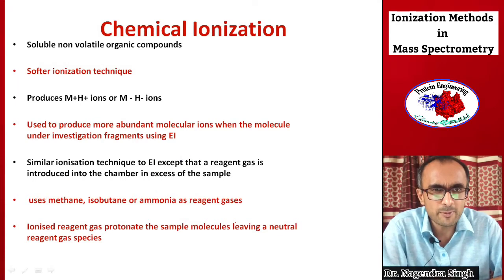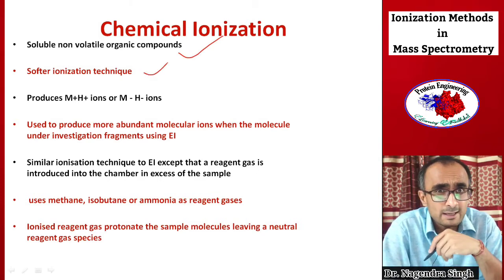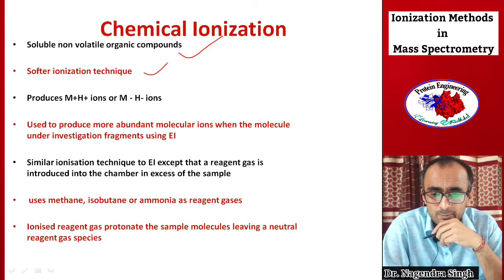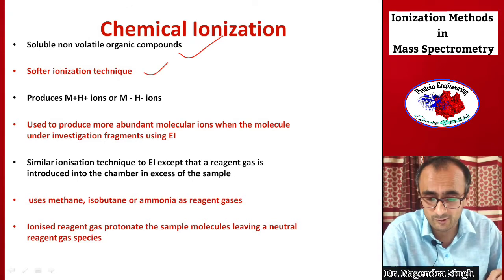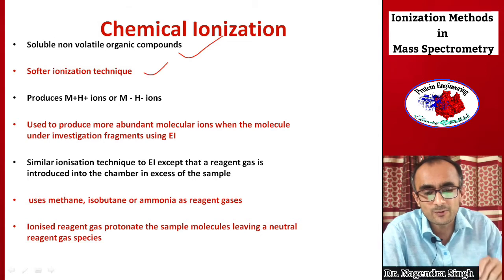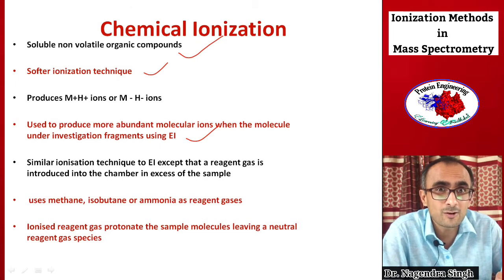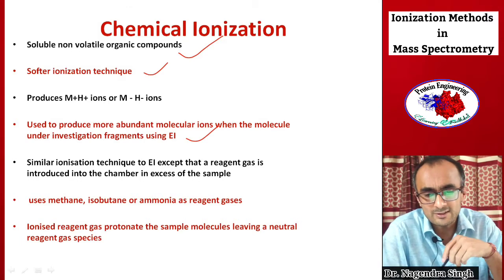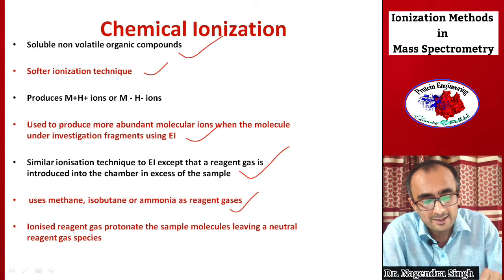Chemical ionization is also used for volatile organic compounds and is a softer ionization method than electron impact. It produces charge on the analyte by protonation or deprotonation — by addition or removal of a proton — and produces more abundant molecular ions. It can be used to reduce the heavy fragmentation seen with EI. It is very similar to EI except a reagent gas — such as methane, isobutane, or ammonia — is used in the ionization chamber.